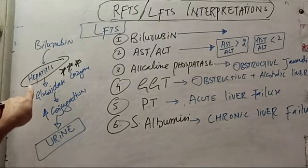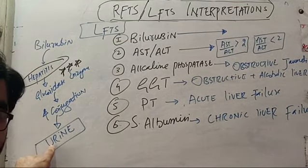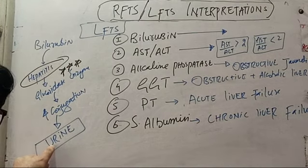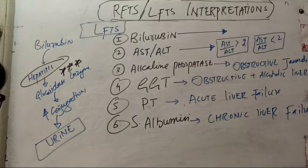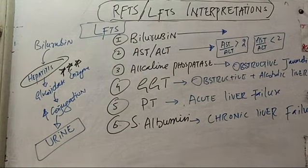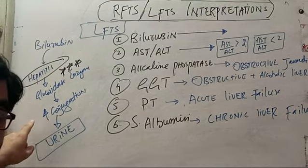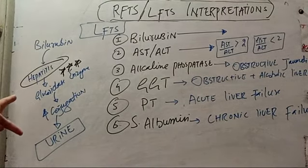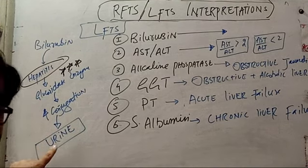In acute hepatitis, is it conjugated or unconjugated bilirubin that comes in the urine? The answer is conjugated bilirubin, because conjugated bilirubin is water soluble and not albumin-bound. Unconjugated bilirubin is lipid soluble and does not appear in urine. That is why the color of urine in hepatitis is yellow — due to conjugated hyperbilirubinemia. This is an important MCQ point.